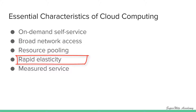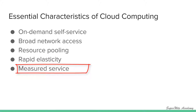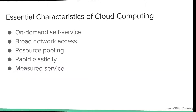Fourth is rapid elasticity, another very important characteristic, which states that resources can be provisioned or deprovisioned as per the user load whenever required. Last and most important is measured services, which means use of cloud system resources is measured, audited, and billed to the customer as per their usage, because cloud service providers deliver their services as a utility and must raise invoices for their customers.